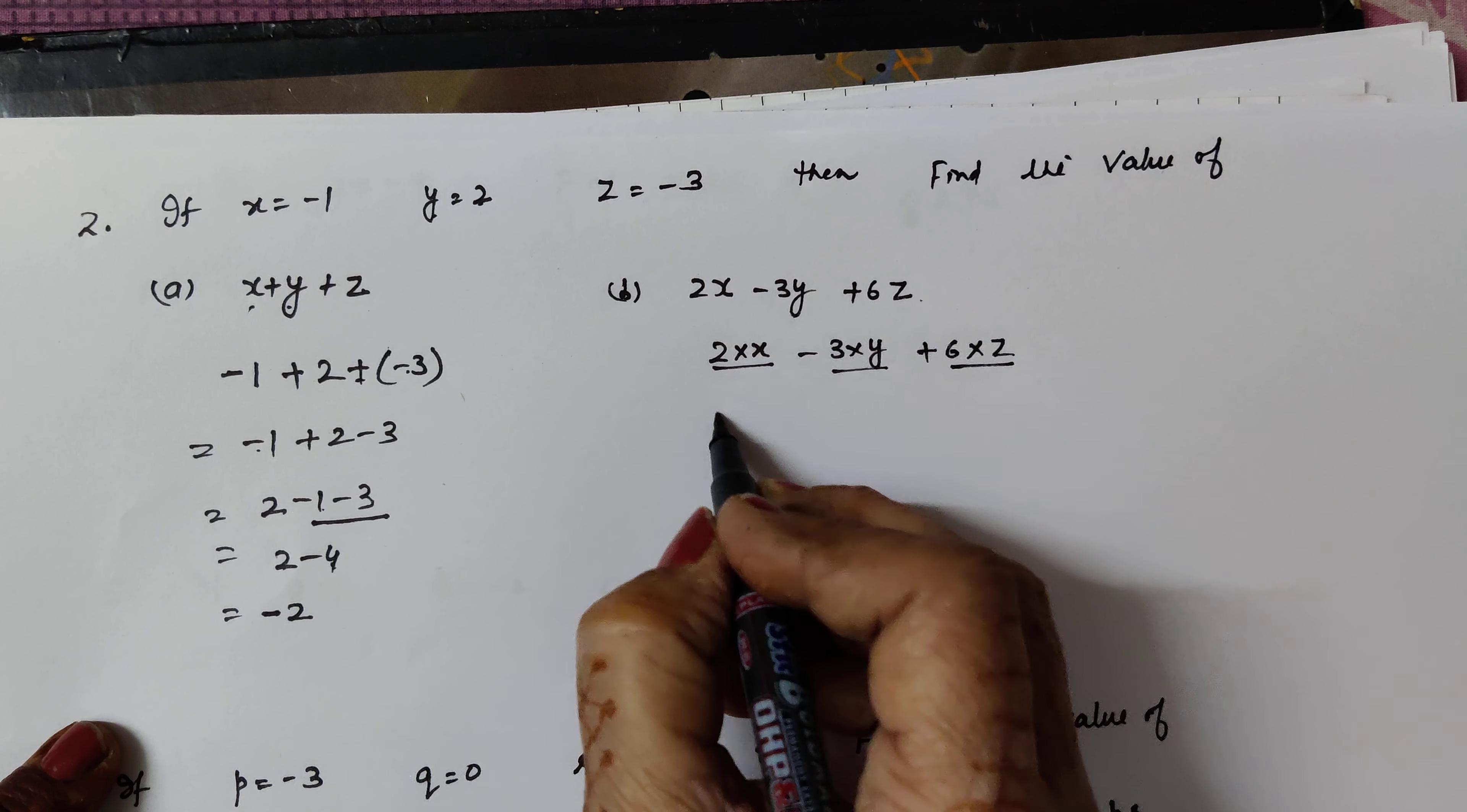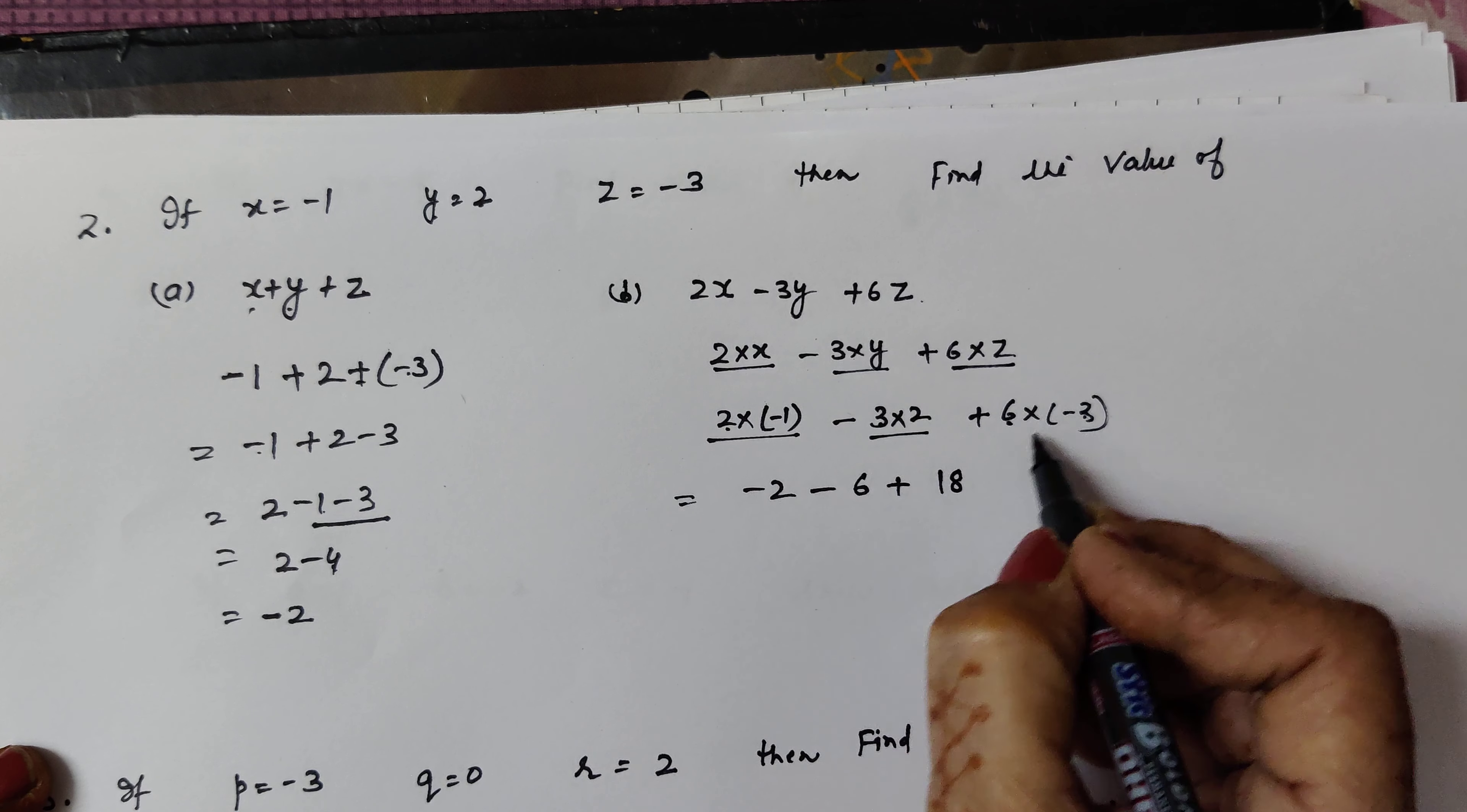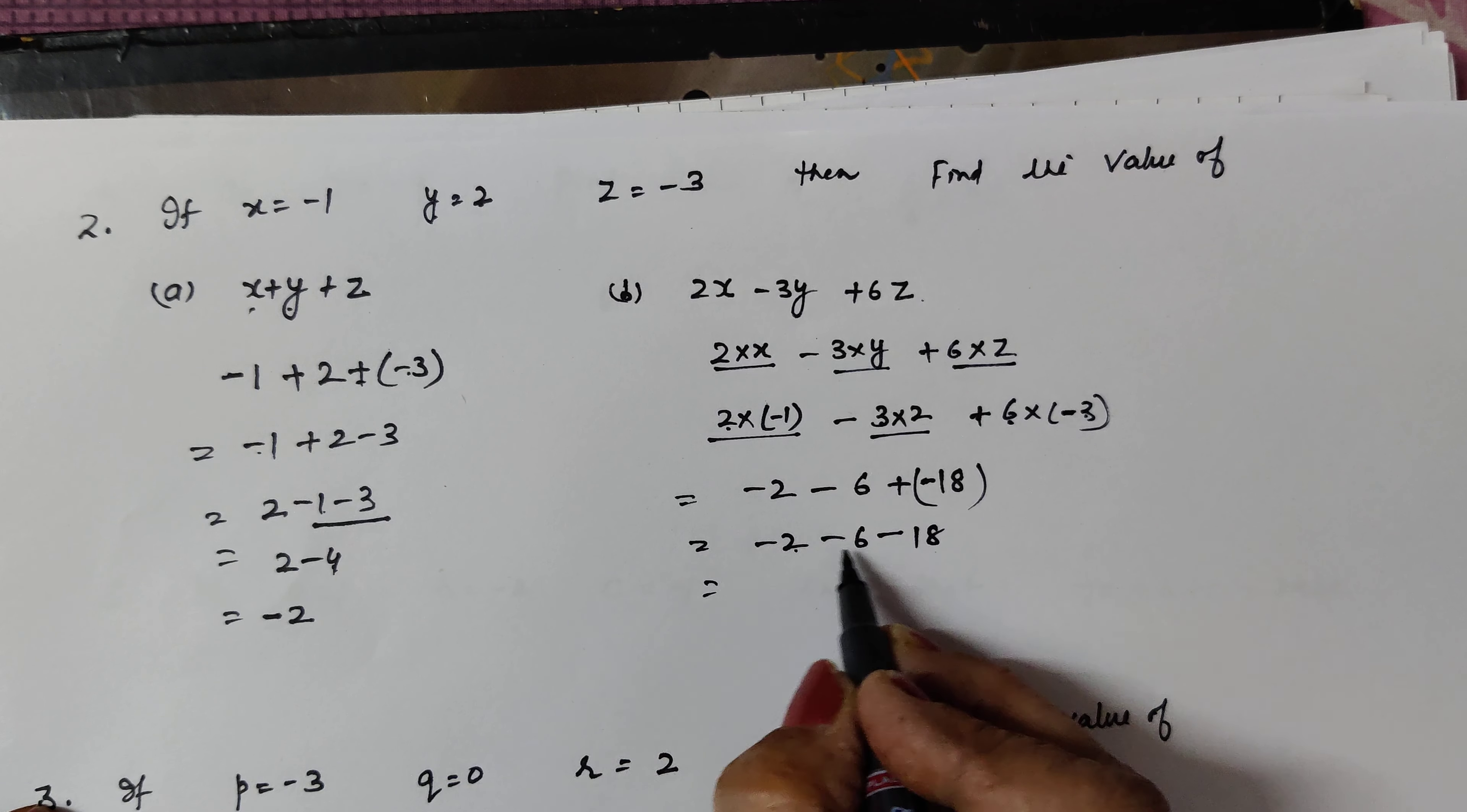Similarly here is 2x, first we write in multiplication form, then 2 into, at the place of x I am filling the value minus 1, 3 into, at the place of y, 2, plus 6 into minus 3. It will be 2 into minus 1 is minus 2, 3 into 2 is 6, plus 6 into 3 is 18. Now negative number once, plus minus, minus we have. Now open the bracket, minus 2 minus 6 plus minus 18.